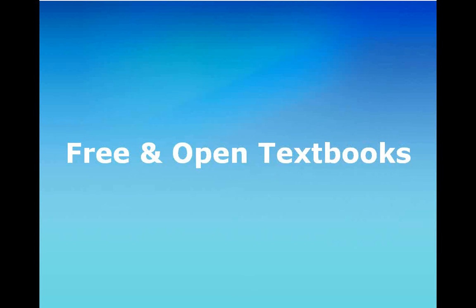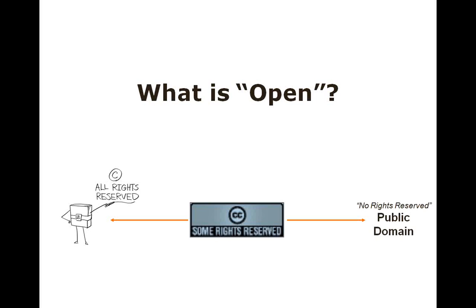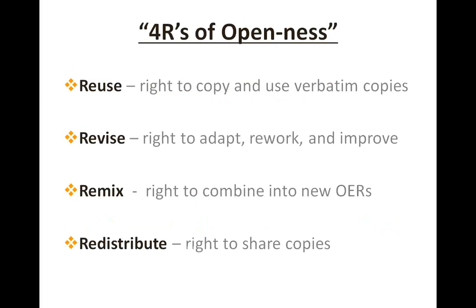Let's talk briefly about free and open textbooks. What is open? It's a good question because many people have different perceptions. We live in a world that was historically either fully copyrighted or completely open with no rights reserved — which wasn't an acceptable alternative to most. The rise of the Internet brought grayer areas in the middle, and we ended up with the Creative Commons license — some rights reserved. There are four Rs to openness: the right to reuse, to revise or adapt a work, to remix it by combining it with other open educational resources, and to redistribute and share copies.